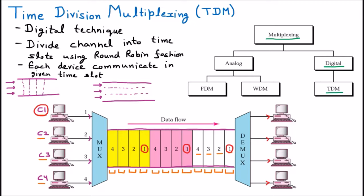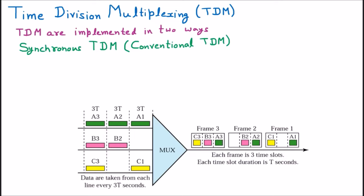Now we are discussing the TDM implementation ways — how many ways we can implement TDM. There are 2 ways of implementation. One is synchronous TDM, which is also called conventional TDM. The second one is asynchronous TDM, which is called statistical TDM.